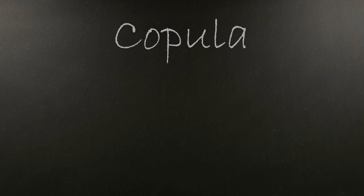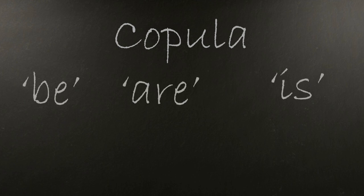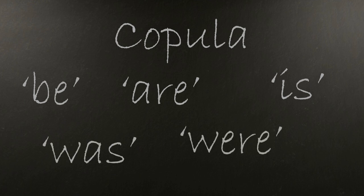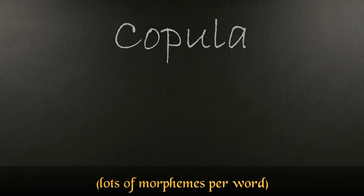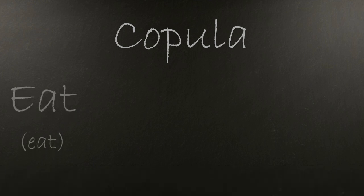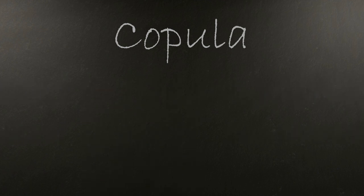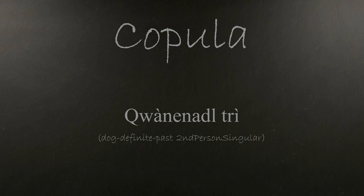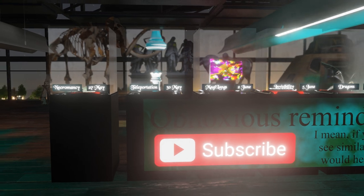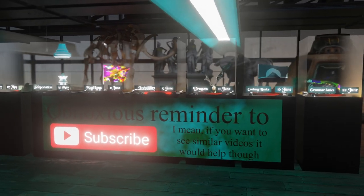Before wrapping up this video, I should bring up the copula. The copula refers to the word 'be' and all its different tense and number forms — like 'are,' 'is,' 'was,' 'were.' In highly synthetic languages — that is, ones that contain lots of morphemes, where a morpheme is basically just an individual bit of meaning — the copula is often attached to nouns with affixes. So let's just say you can inflect a noun like a verb to make it one. So 'you are a dog' becomes 'quanene naljri.' Thank you for watching — if you want to see more, I do have other related videos, and there's also the subscribe button. Thank you again, and good night.